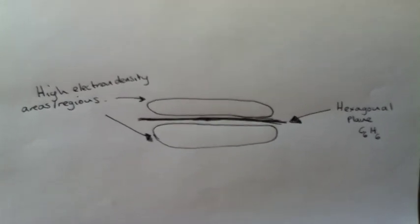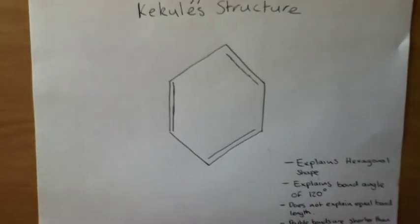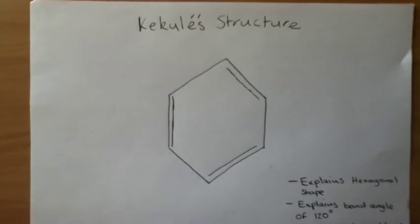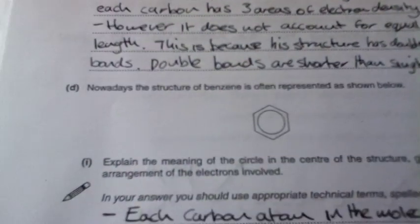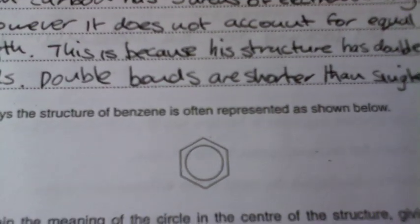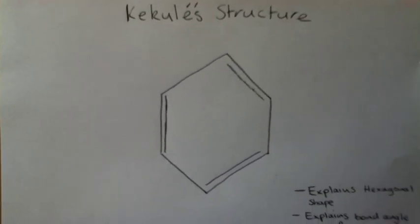And it is a very stable molecule. However, the structure of benzene has historically had many theories about the structure. This is the modern representation which I've just been talking about. But in 1865, a man called Kekule...